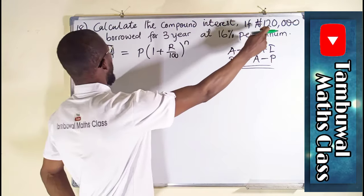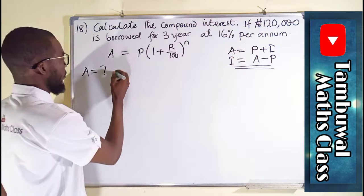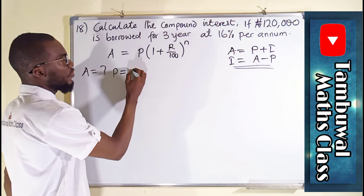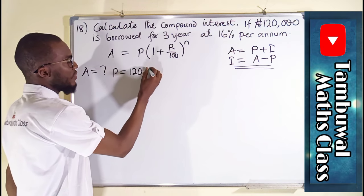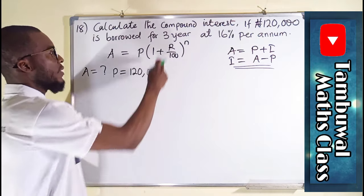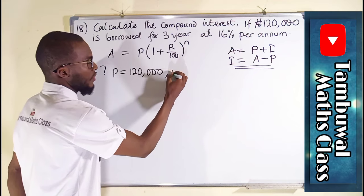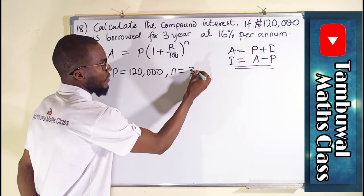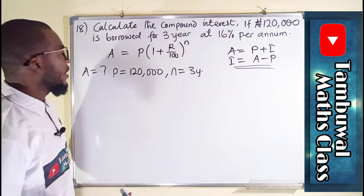You can see the principal is given. P is equal to 120,000. Time number of years is given, which is n, 3 years. And lastly, the rate is also given, 16%.